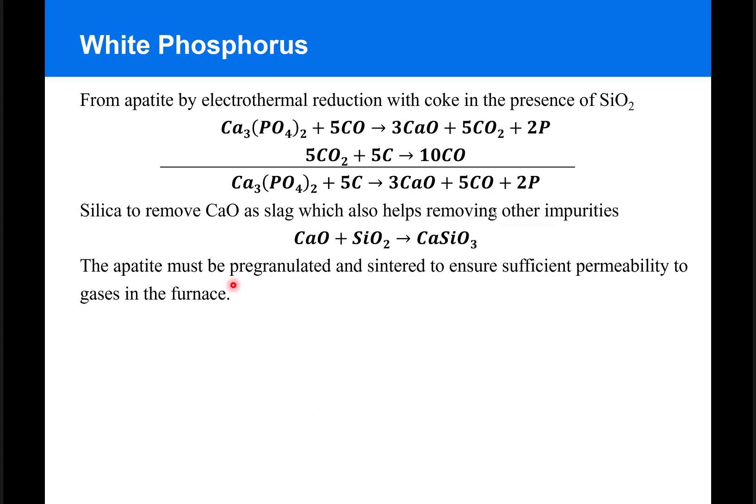The apatite used for this process must be pre-granulated and sintered to ensure sufficient permeability to the gases used in the production inside the furnace.